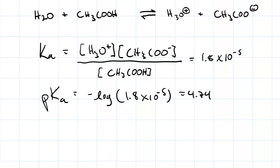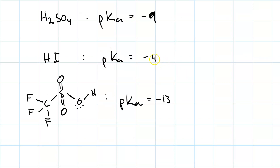Acetic acid isn't particularly strong. On the other hand, sulfuric acid, H2SO4, has a pKa of negative 9 — that's really strong. Hydroiodic acid has a pKa of negative 11, and trifluoromethane sulfonic acid has a pKa of negative 13. So hydroiodic acid is 100 times stronger than sulfuric acid, and triflic acid is 100 times stronger than hydroiodic acid. Triflic acid is so strong it's what's called a superacid.